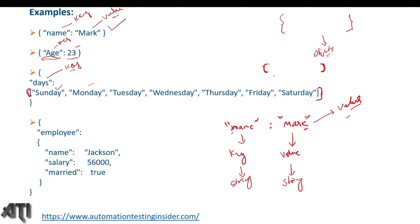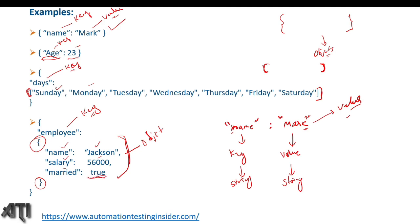The square bracket marks the start and end of the array. In the fourth example, 'employee' is a key and it holds an object, because it is written within curly braces. Inside that object we have different keys: name is Jackson, salary is 56,000, and married is of boolean type — true or false. So this JSON file holds an object where the value is also of object type.